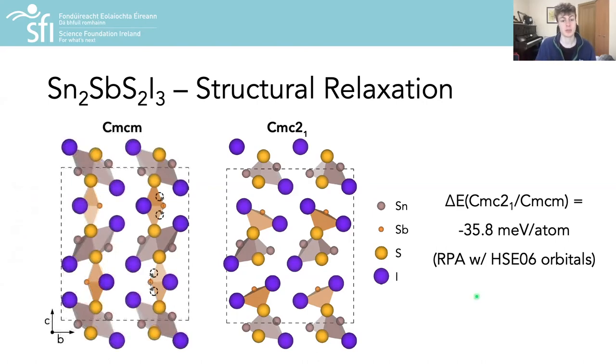The main difference between these two structures is the location of the antimony atoms. In going from the centrosymmetric Cmcm structure to a non-centrosymmetric Cmc2₁ structure, the antimony atoms move either up or down to fuse with the tin-sulfur-iodine chains, resulting in these stoichiometric chains along the crystal A direction. Crucially, this results in the breaking of inversion symmetry in the crystal with important implications as we'll see in a moment.